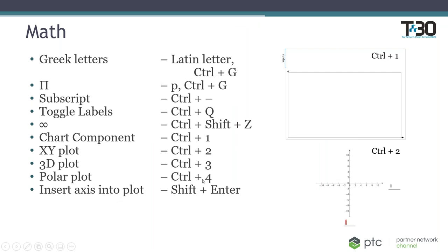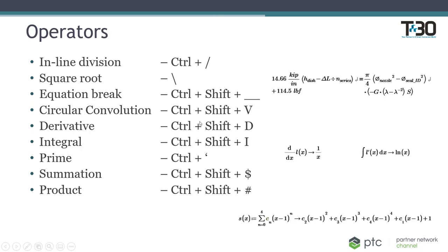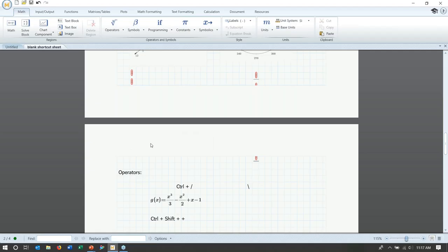For operators, there are many useful shortcuts. Inline division can be nice for notation — Ctrl+Forward Slash converts a bar division into inline division. You can also add equation line breaks using Ctrl+Shift+Plus on an operator like plus or multiplication. Line breaks are useful when you have a long equation that runs out of horizontal space, allowing the equation to wrap without crowding your document.